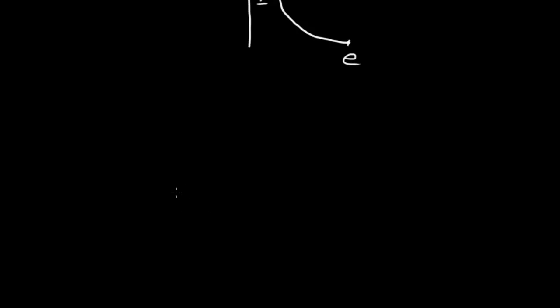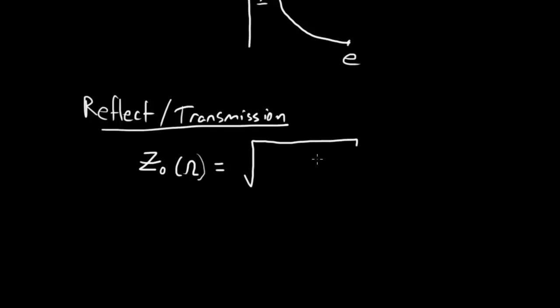I'm going to talk about what governs these terms. So first let's talk about what governs the reflection and transmission terms. For reflection and transmission, primarily what governs these terms is the characteristic impedance, which is generally written as Z naught. This is in terms of ohms.